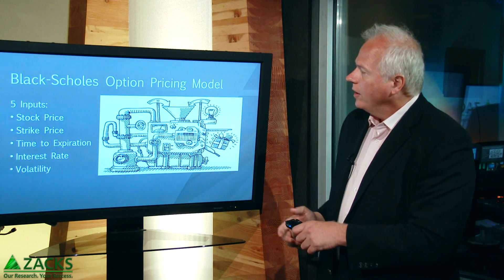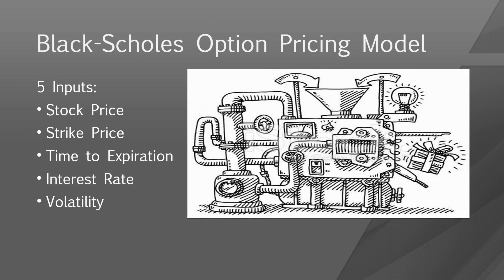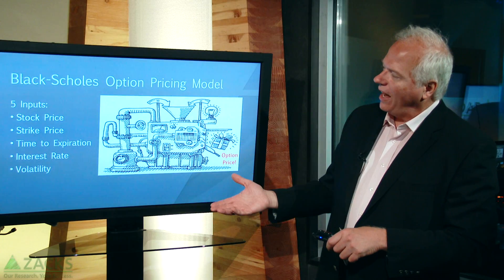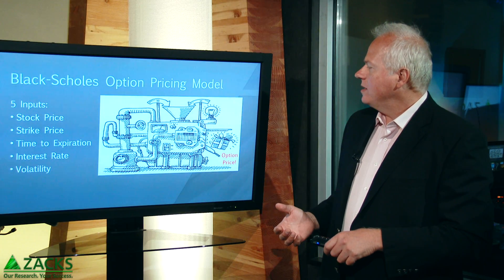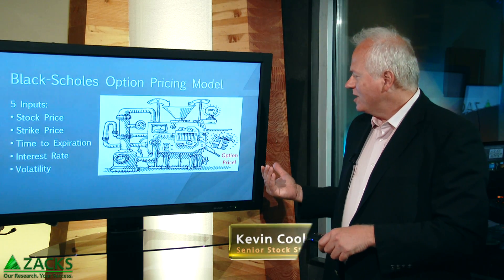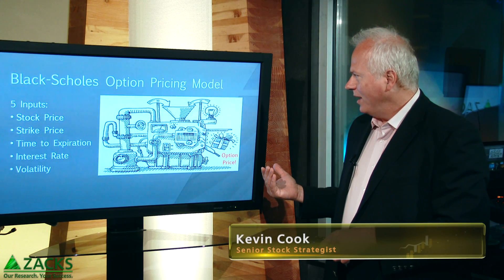So back to the model — plug all these things in, hit go, and boom. There's your output: the option price. Five inputs go into the options pricing model, and it spits out an option price.